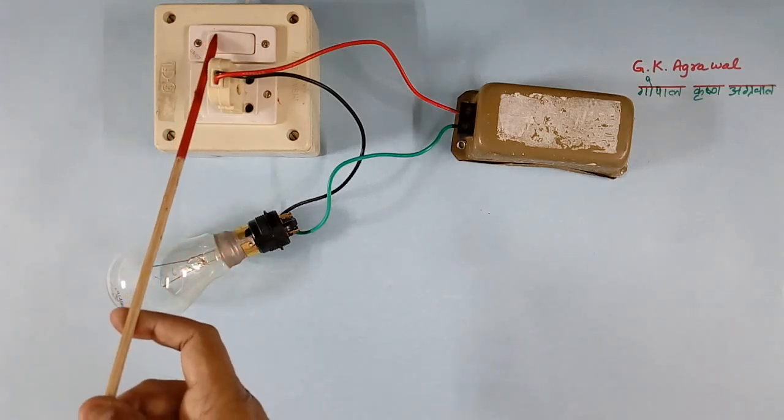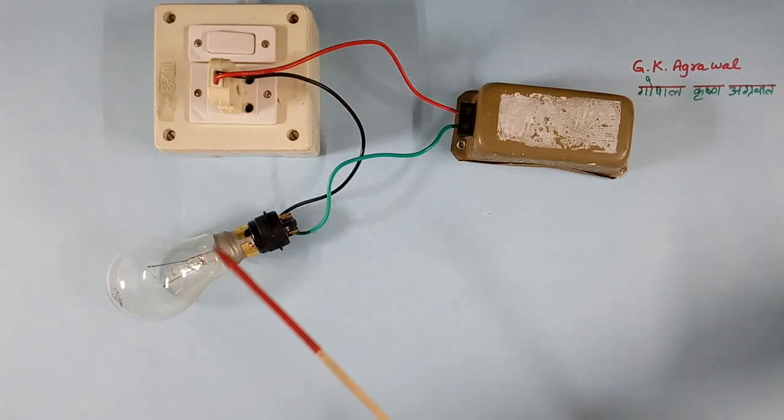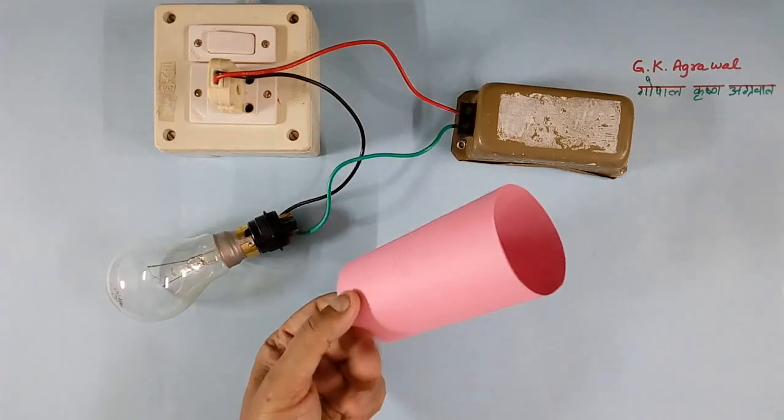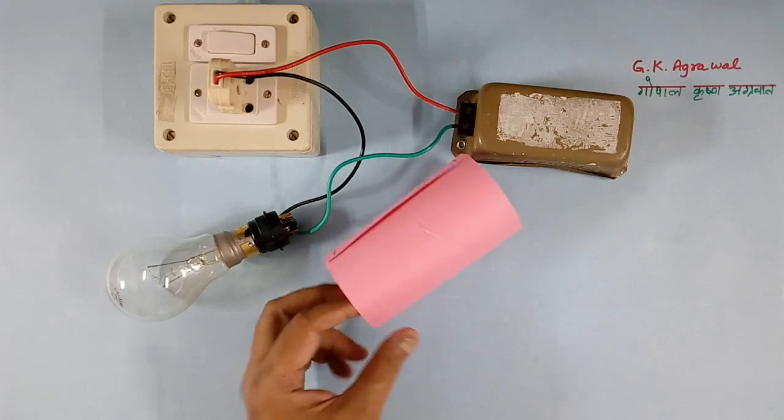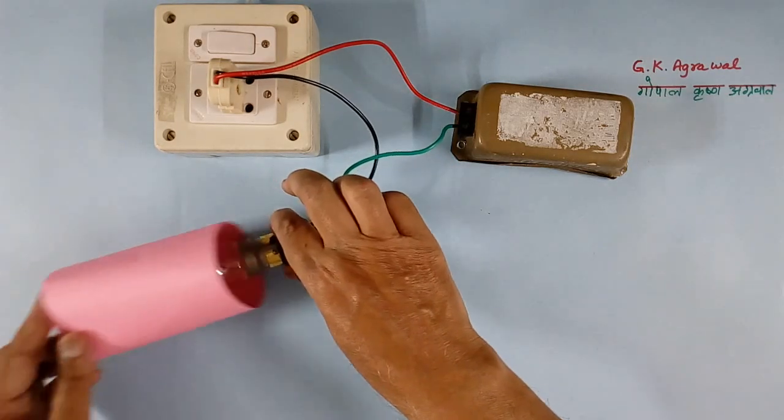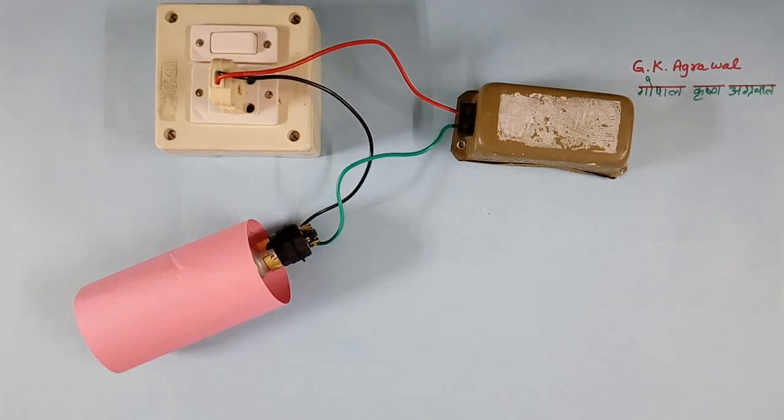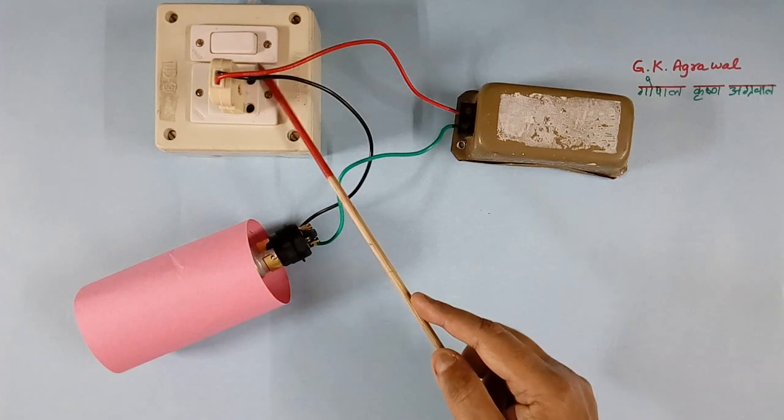When I switch on the switch, light will come from here and there will be focusing problem. So what I will do - I have made one cover that I will put around this bulb. So I have put the cover here. Now focusing problem will be less.